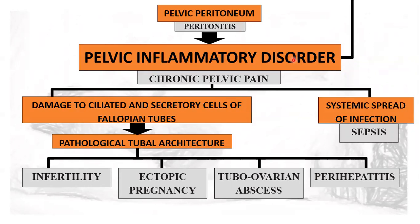This establishes pelvic inflammatory disease, which can occur in a subacute to chronic phase, manifested as chronic pelvic pain. This leads to damage to the ciliated and secretory cells of the fallopian tubes, resulting in pathological tubal architecture, manifested as infertility, ectopic pregnancy, tubo-ovarian abscess, and perihepatitis. Finally, it could reach the systemic circulation and spread through the blood, causing sepsis.